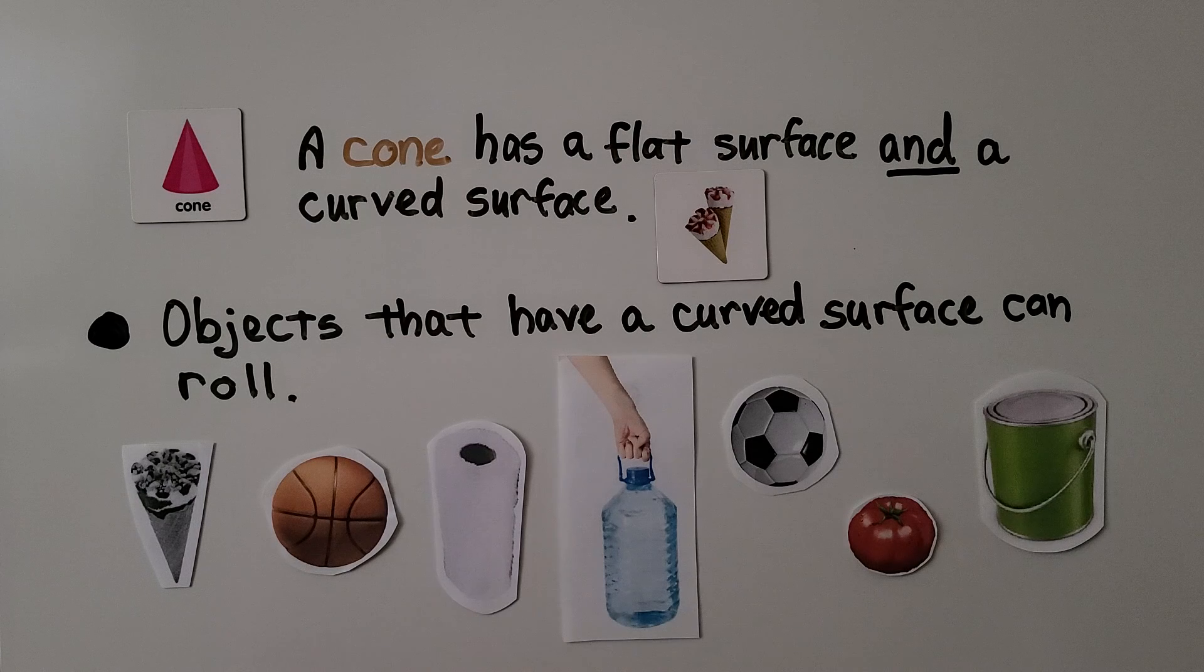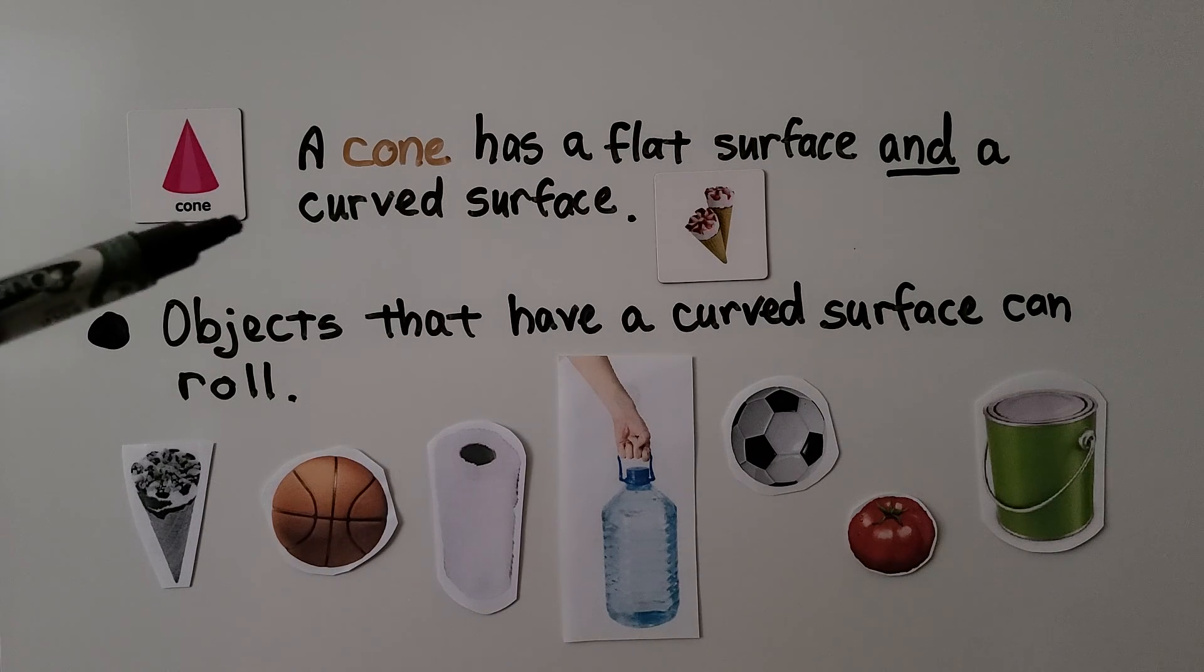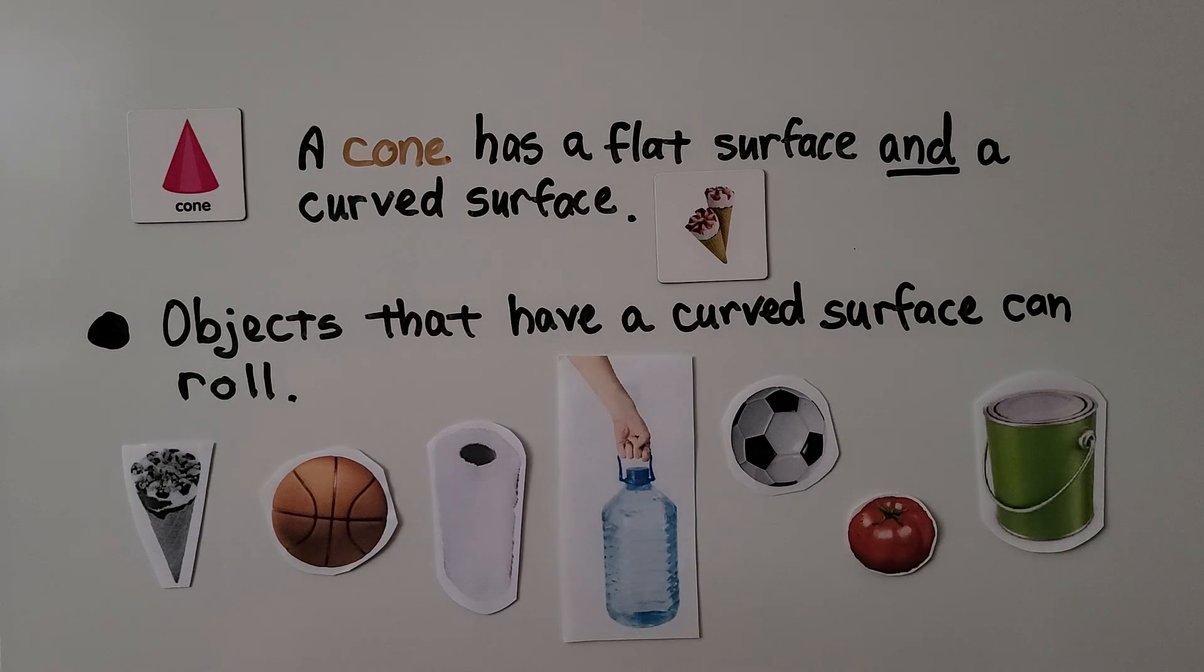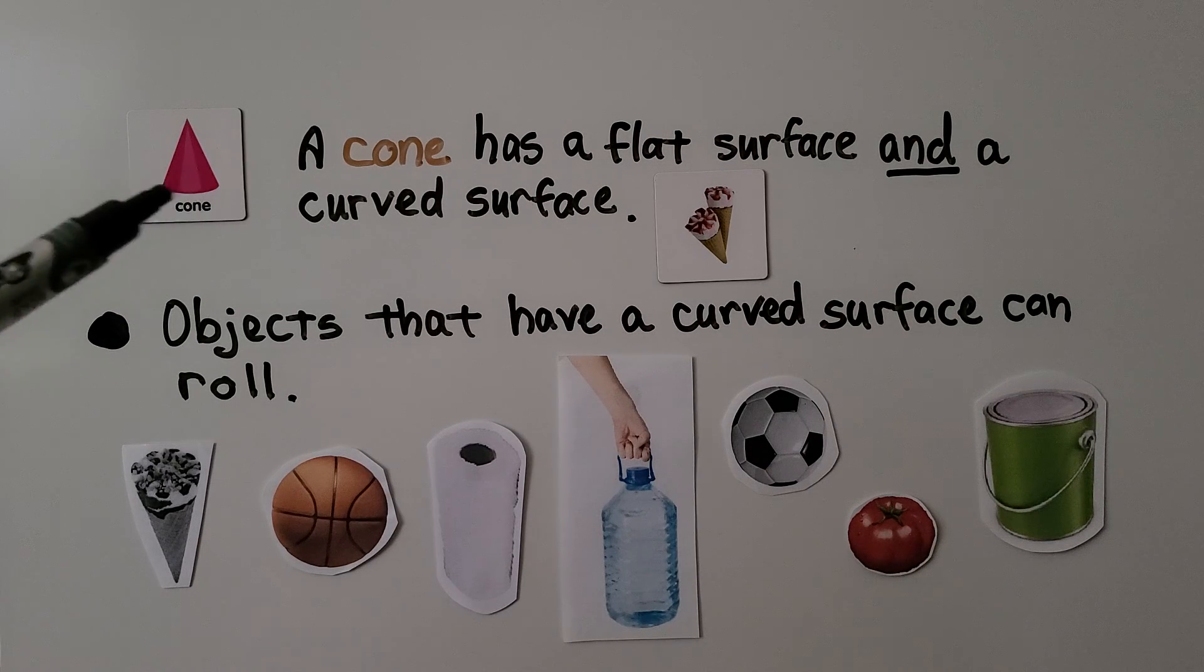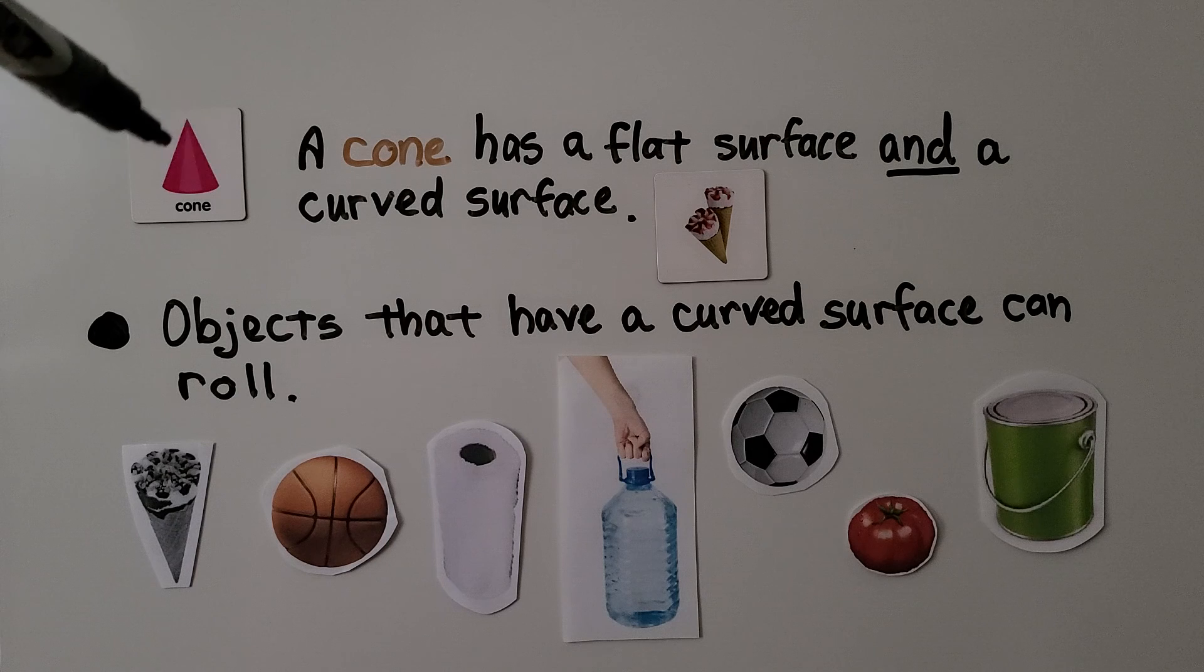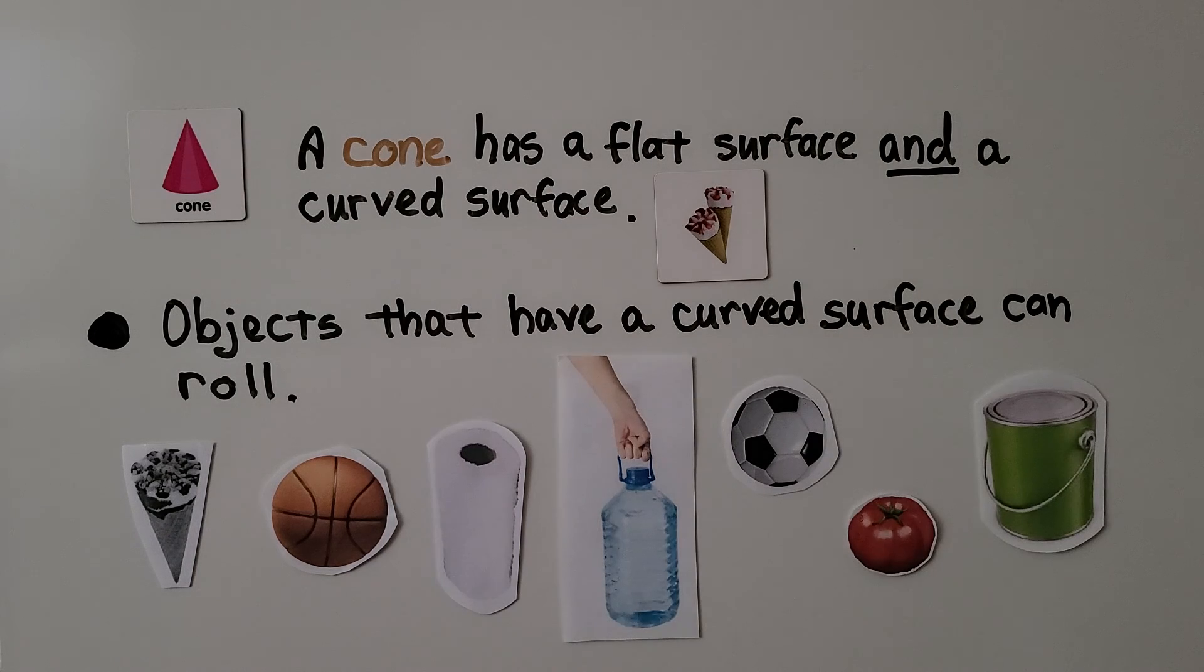A cone has a flat surface and a curved surface. So it's got a flat surface, like down here, and a curved surface going around. And objects that have a curved surface can roll.